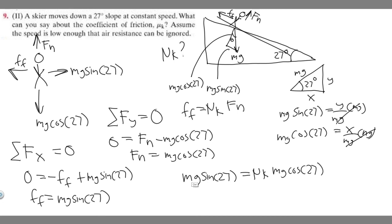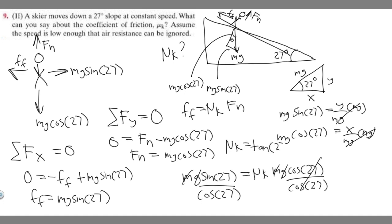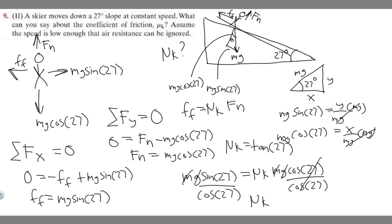Notice that the mg's cancel on both sides. Then we divide both sides by cosine of 27 to get mu sub k by itself. Sine over cosine is tangent, so mu sub k equals the tangent of 27. If you plug that into the calculator, mu sub k is equal to approximately 0.5095. So this right here is your answer — hopefully you found this useful.